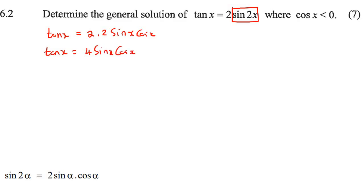Now, tan is sin over cos. We're typically always going to change that. We're going to multiply the cos x over now, so we're going to end up with sin x equals to 4 sin x cos squared x.